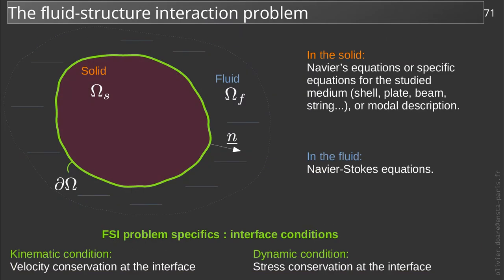We have now detailed the set of equations used to describe the fluid structure interaction problem. We have seen the equations in the solid, in the fluid, and the two conditions at the interface: the kinematic condition and the dynamic condition. We are dealing with a very complex problem, linking two sets of equations on a moving interface. The next video will be a first step towards the simplification and classifications of this problem. We will deal with the dimensional analysis of the equations.